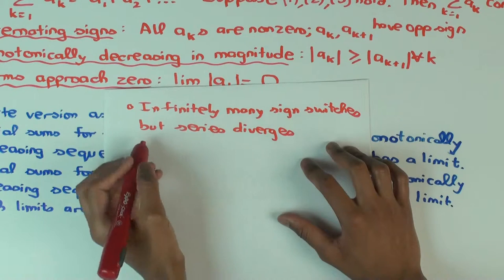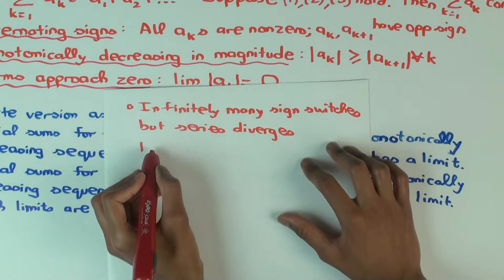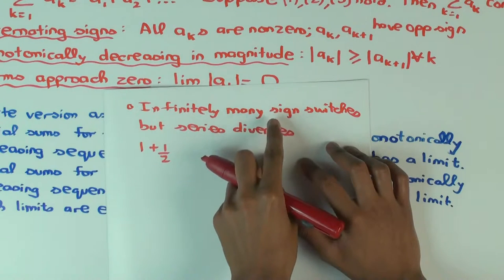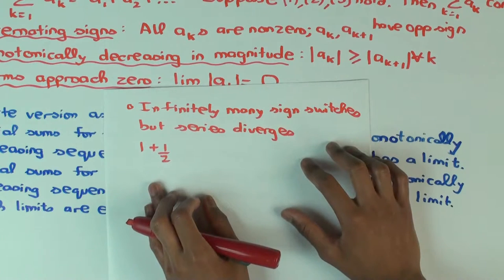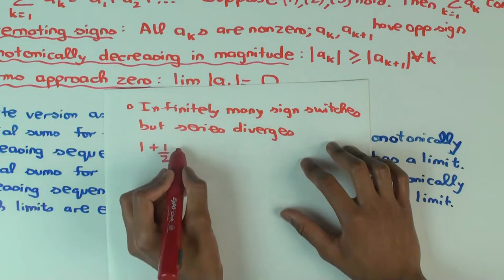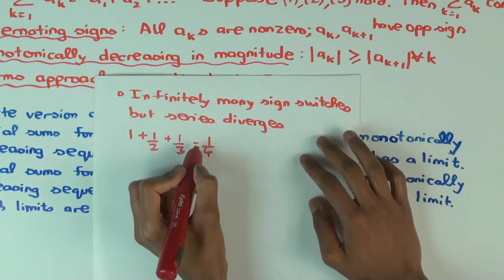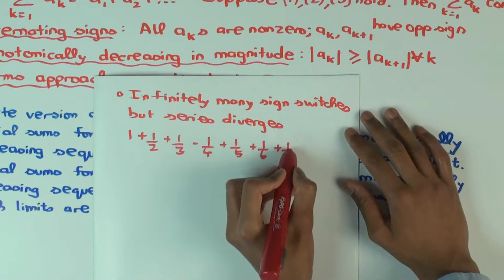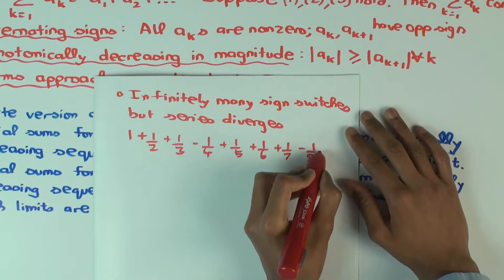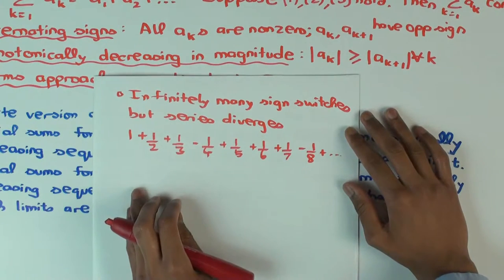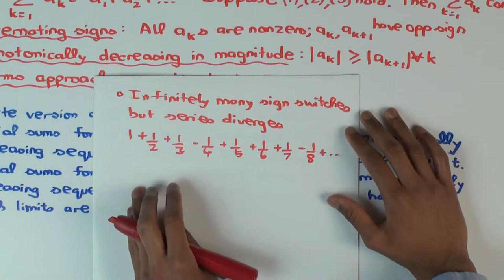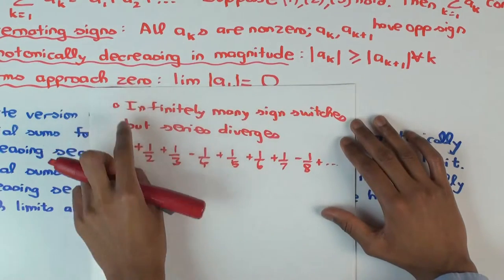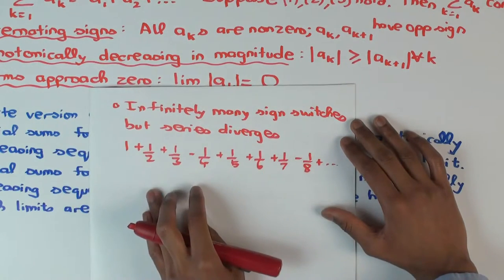One suggestion: one, plus one-half, plus one-third... but I still want the sign to switch infinitely many times. If you make everything positive, then obviously it won't converge. So: one plus one-half plus one-fifth plus one-sixth plus one-seventh, minus one-eighth. I had planned to do two positive, one negative, but that's fine. This series satisfies conditions two and three: terms are monotonically decreasing in magnitude and approach zero. The signs switch infinitely often, but it doesn't converge.